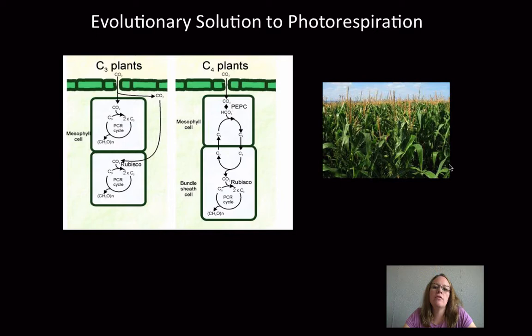So what are plants to do? Well, there's an evolutionary solution to photorespiration. C3 plants are the ones that we've mainly been talking about based on the G3P molecule. And they photosynthesize just like we talked about. We have the Calvin cycle with Rubisco. But an evolutionary strategy that plants have developed is called the C4 pathway, and we call these plants C4.